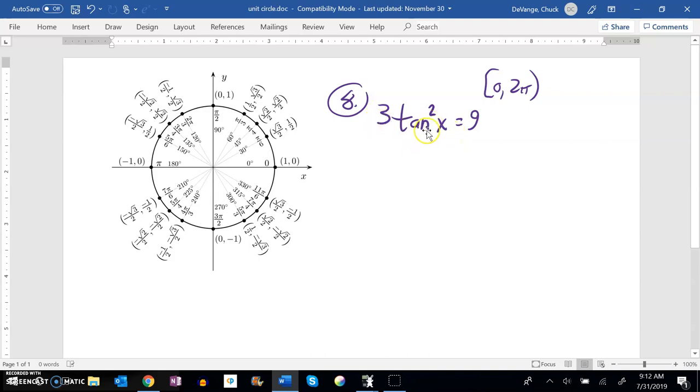So let's work to get tangent all alone first. Notice this is three times that. So I'm going to divide both sides by three and now I'll square root to get rid of that squaring, and remember when you square root in a problem to undo squaring plus or minus comes with it.